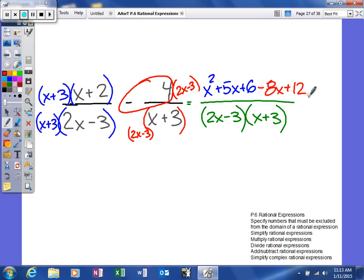Now what I can do is I can go ahead and combine my terms in my numerator. So it will give me x squared, and then minus 3x, and then plus 18, over 2x minus 3 times x plus 3.